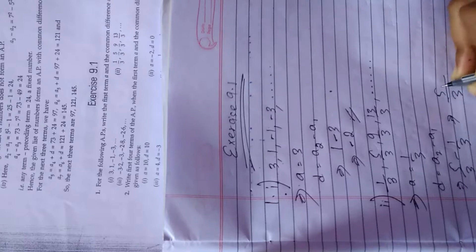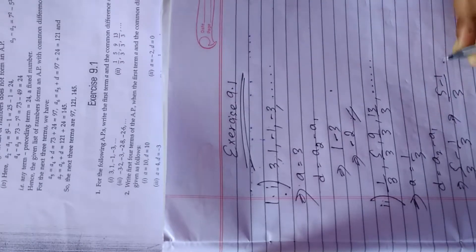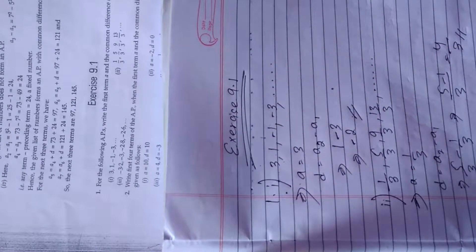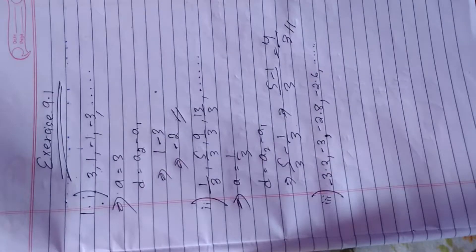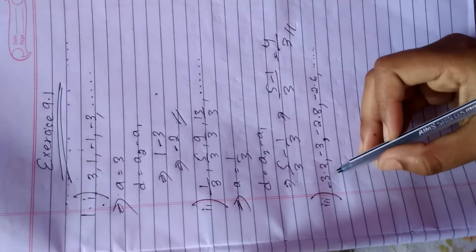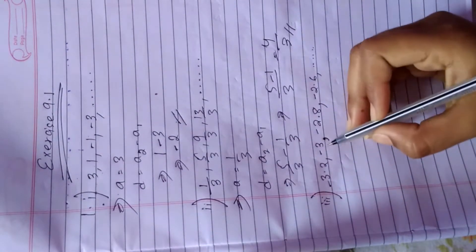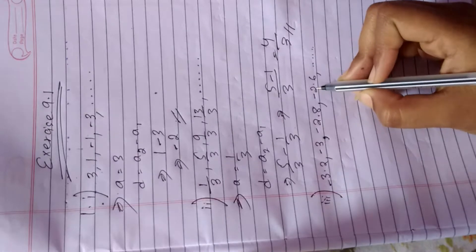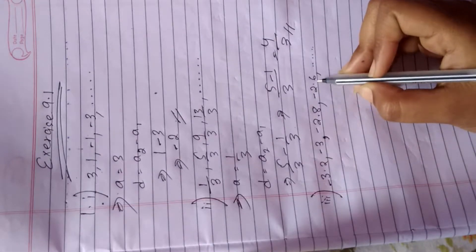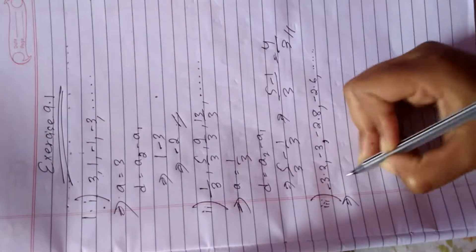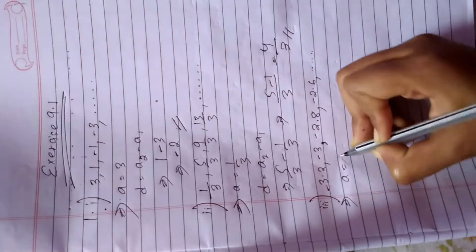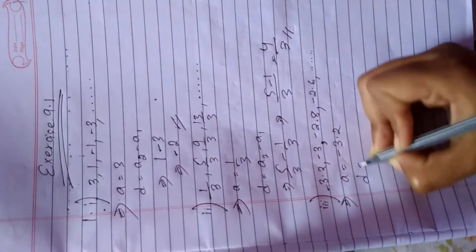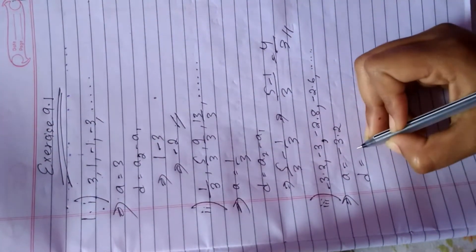So it is 5 minus 1, that is 4/3. This is the answer. Question 3: we have -3.2, -3, -2.8, -2.6, ... So a here is -3.2.